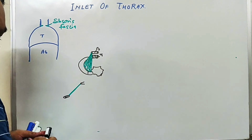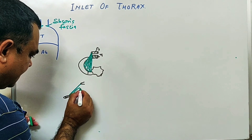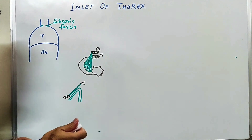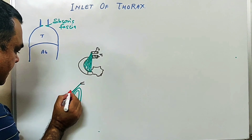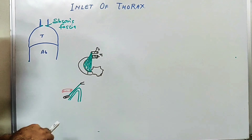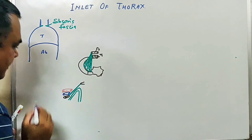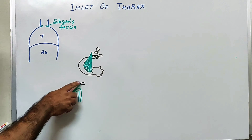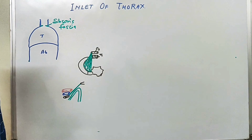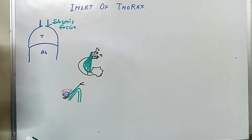Deep to this there is pleura — lung and pleura. The apex of the lung and pleura lies here. The structures that lie here include the subclavian artery and subclavian vein. So this fascia covers these structures. The important thing is which structures form the boundary of this inlet of the thorax.